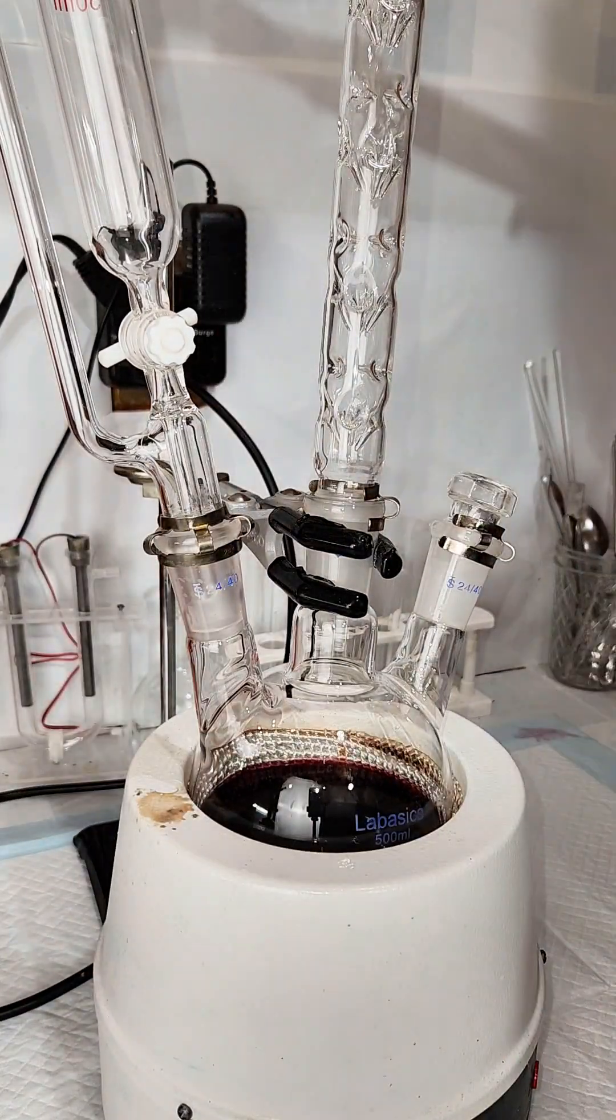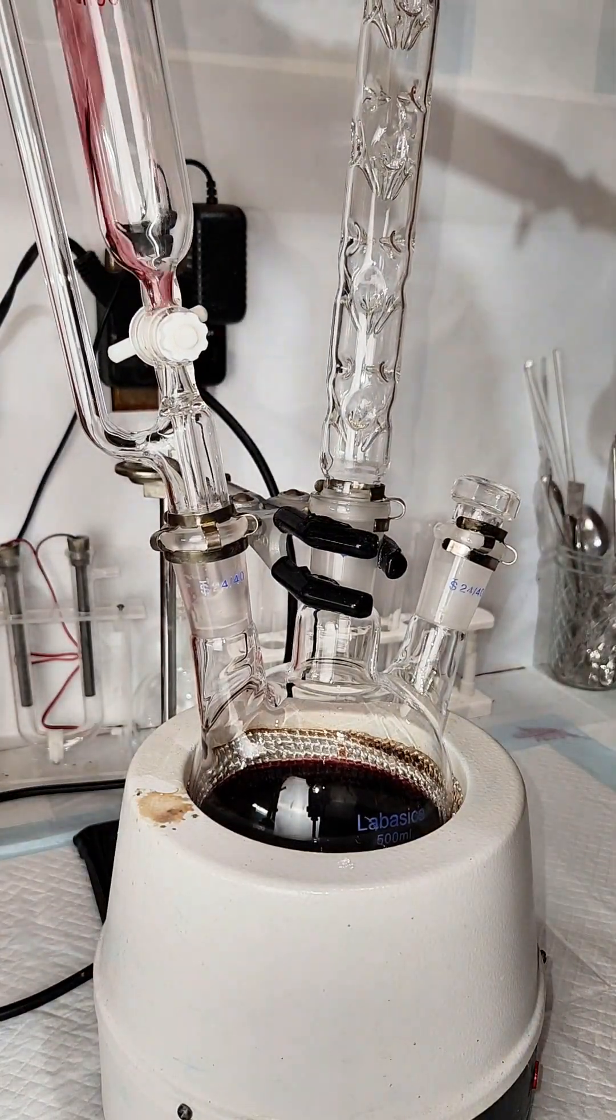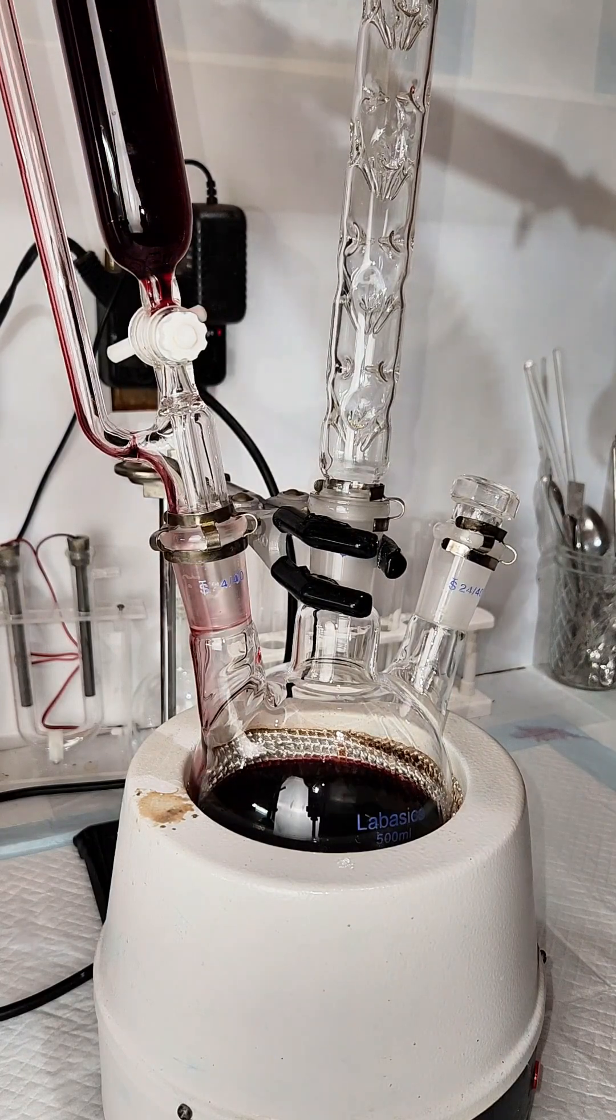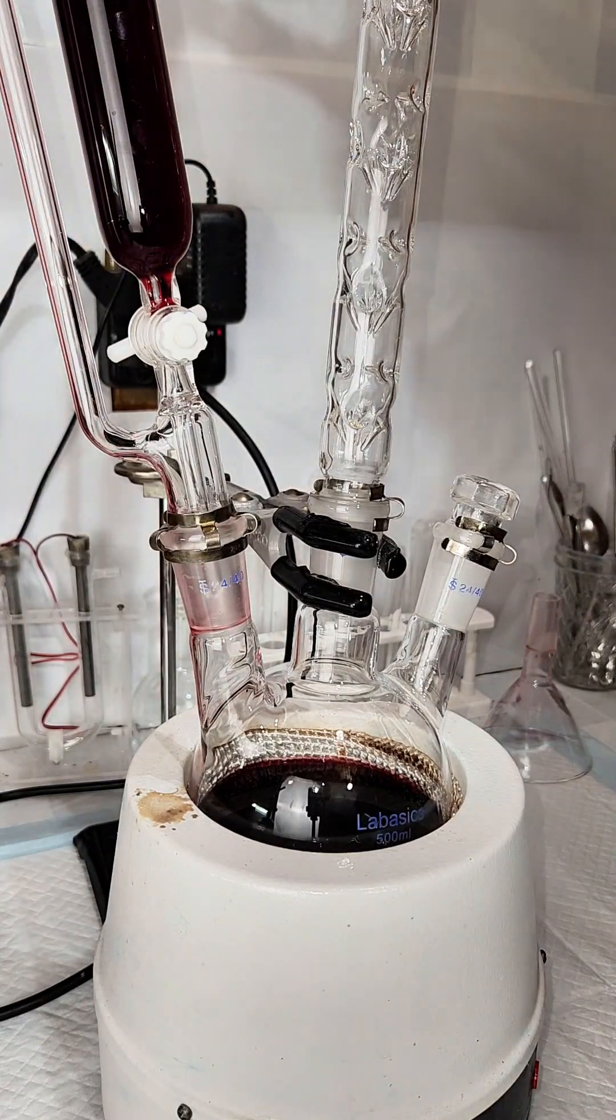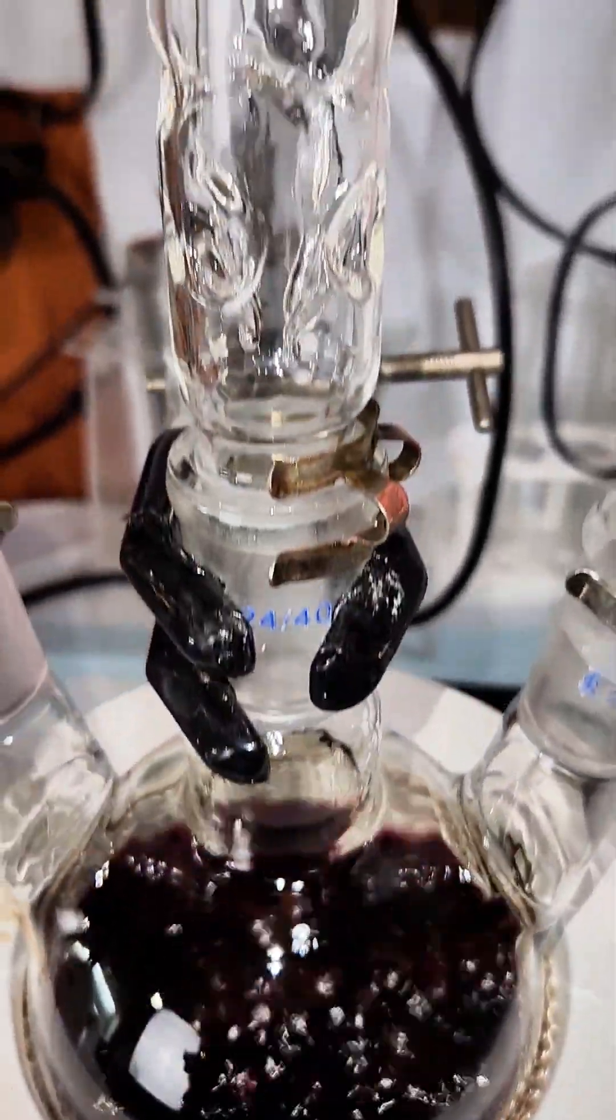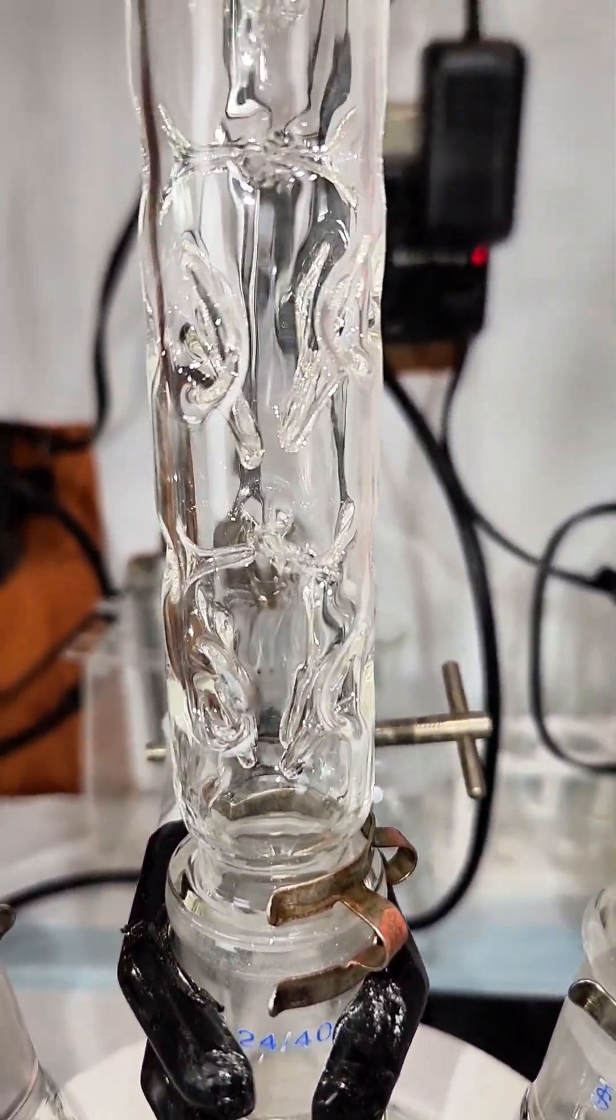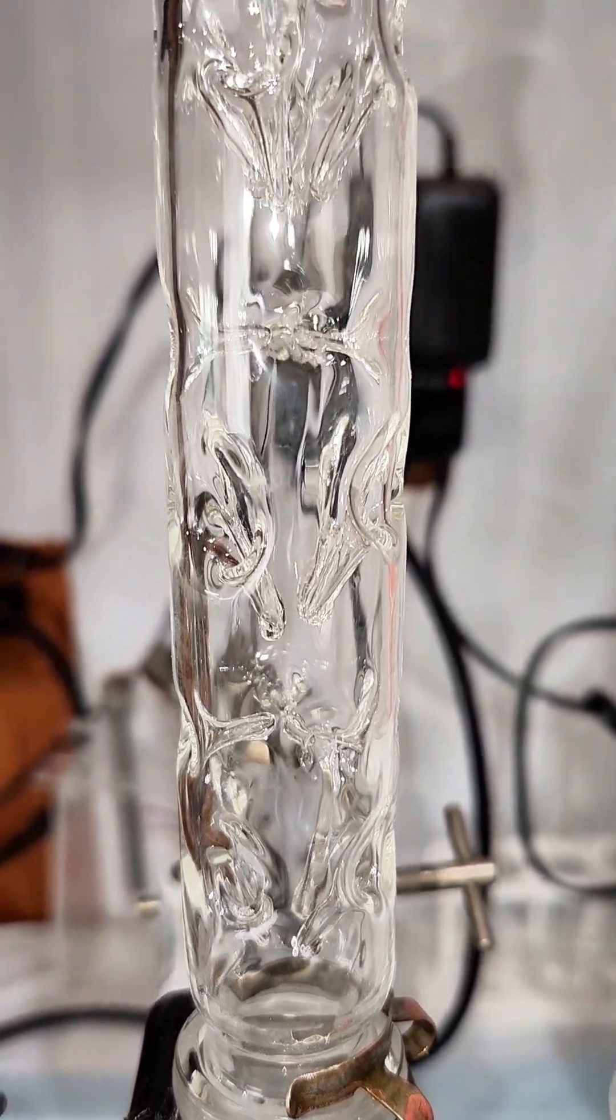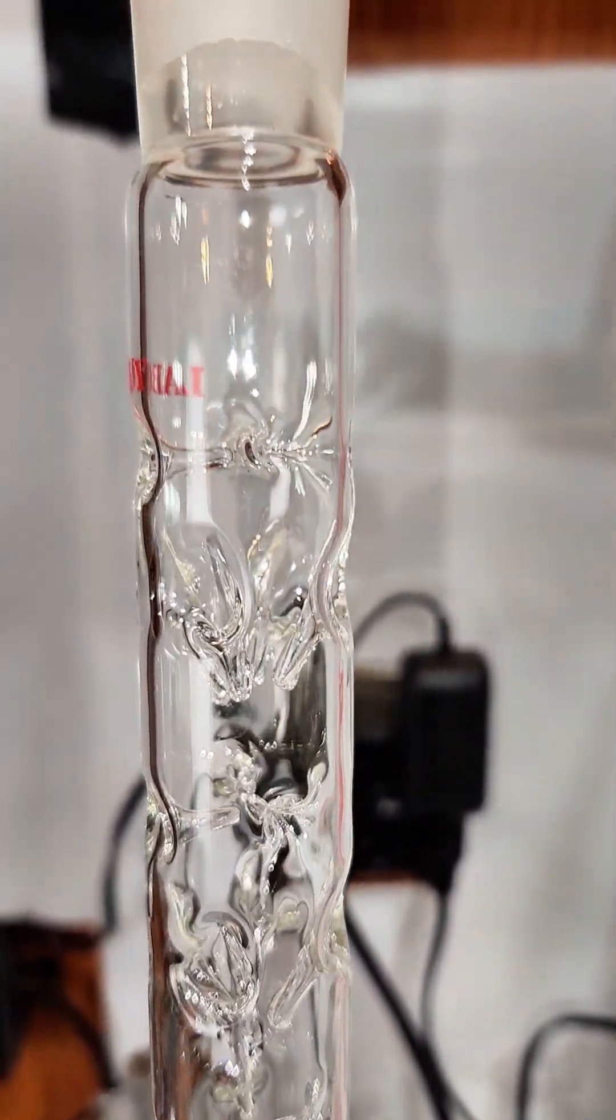To get the ethanol out, I set this up for a fractional distillation along with an addition funnel where I pour the remainder of the wine that didn't comfortably fit in the flask. Ethanol boils at a much lower temperature than water, and if you look closely, you can watch the vapor front of ethanol as it travels up the fractional column and down the condenser.